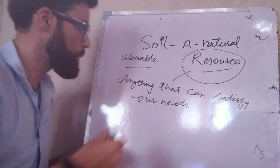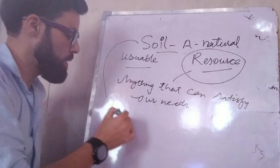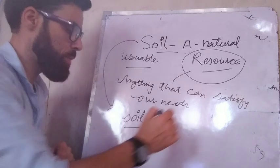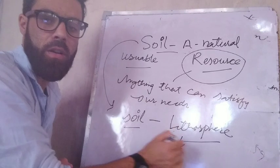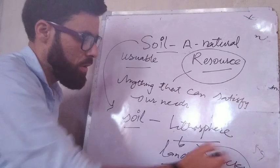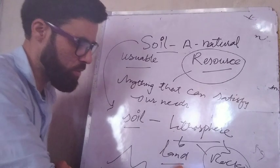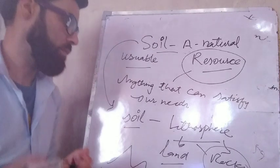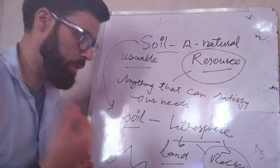Soil is the most important resource. Let's make the word 'soil' clear — what is soil? You may have heard about the lithosphere. The lithosphere is the sphere of land, sometimes called the sphere of rocks. There is another sphere that contains rocks called the asthenosphere. Soil is a part of the lithosphere.